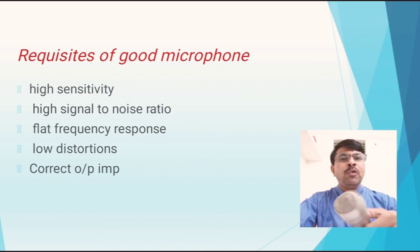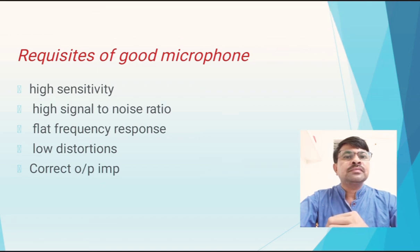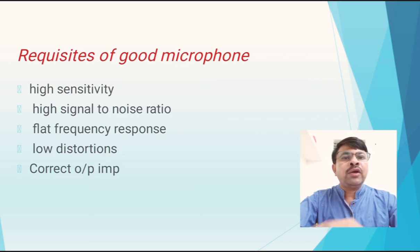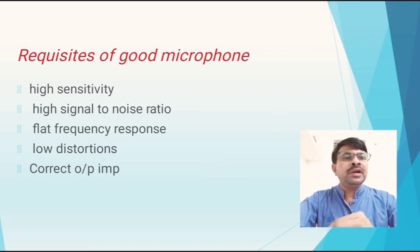Some important requirements of a good microphone: the microphone should have high sensitivity; it should have a high signal-to-noise ratio, meaning signal power should be high and noise power should be low; it should have a flat frequency response; it should have low distortions — both amplitude distortion and phase distortion; and it must have the correct output impedance to match maximum power transfer from the microphone to the amplifier.